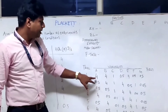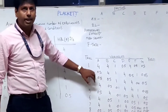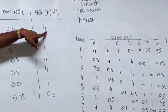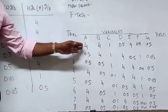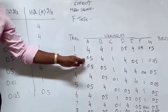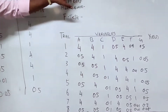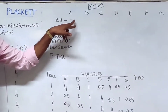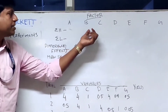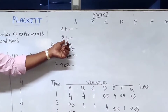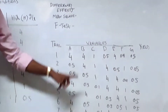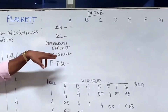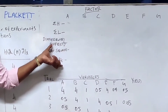The calculation part: after filling the table with highest and lowest values for each variable A through G — 4 highest and 4 lowest values — the formula for sigma H is the summation of all highest values of A: 4 + 4 + 4 + 4 = 16. For sigma L, the summation of low values: 0.5 + 0.5 + 0.5 + 0.5 = 2. Similarly, we calculate sigma H and sigma L for B, C, D, E, F, and G.